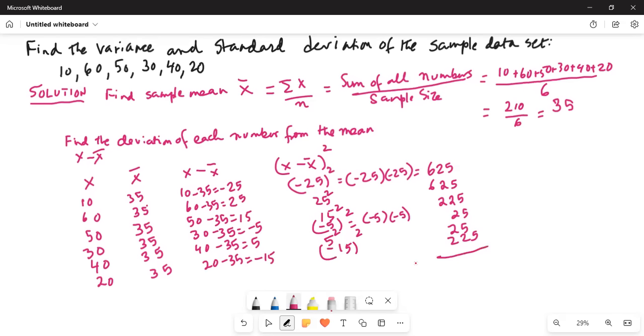Next we are going to find sum of x minus x̄ squared. So we will add all these numbers. So we are adding 625 plus 625 plus 225 plus 25 plus 25 plus 225, and the total is 1750.